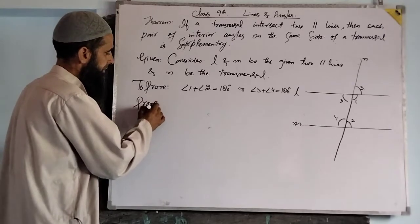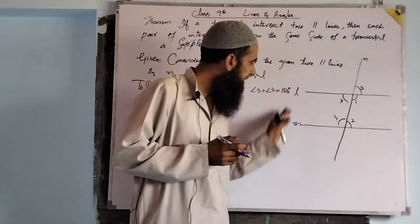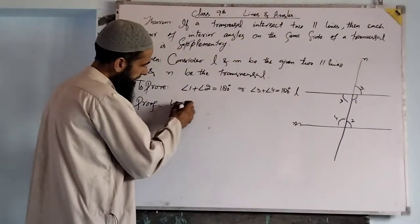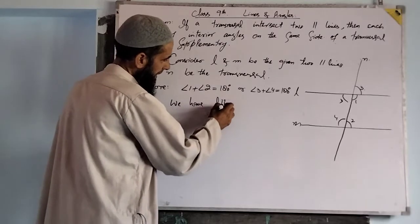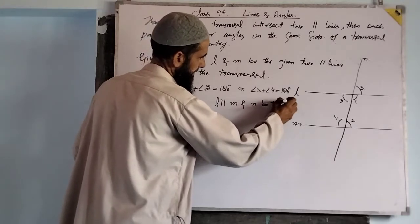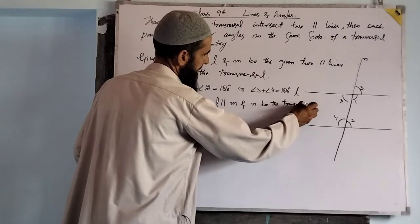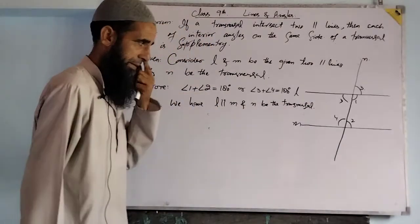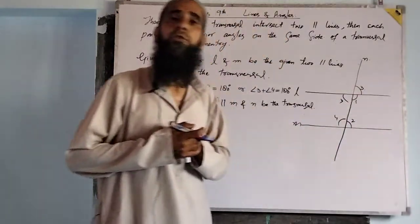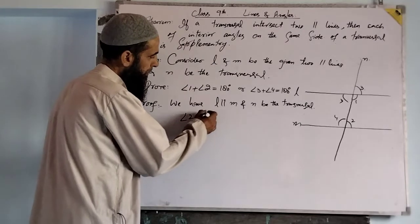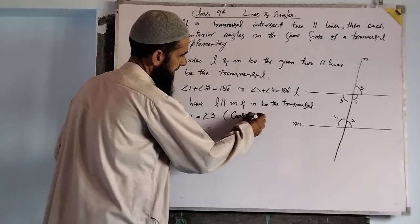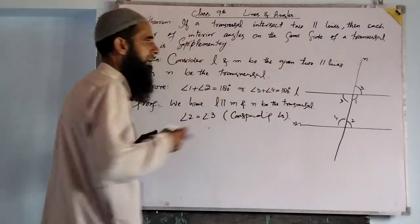Proof: We have L parallel to M and N is the transversal. Since L is parallel to M and N is the transversal, then angle three is equal to angle two — these are corresponding angles.